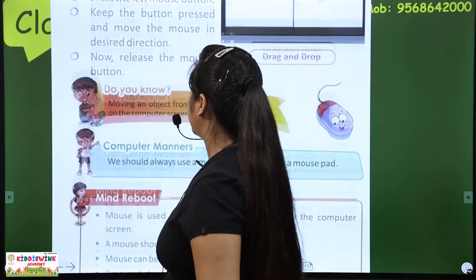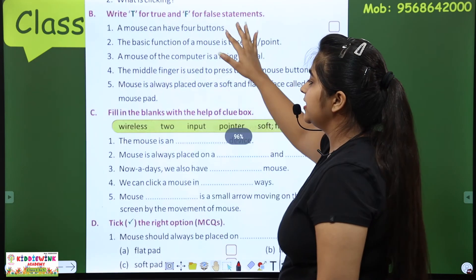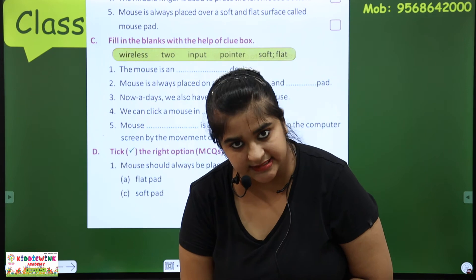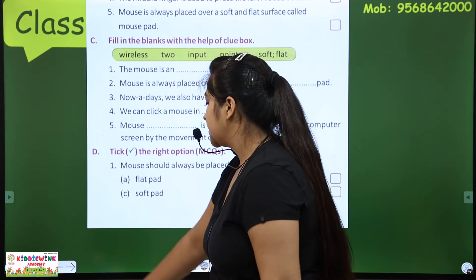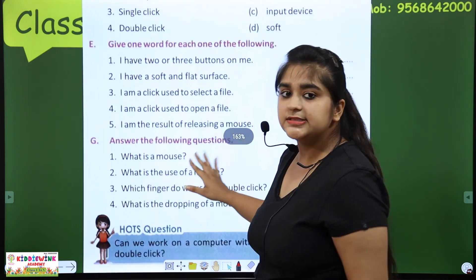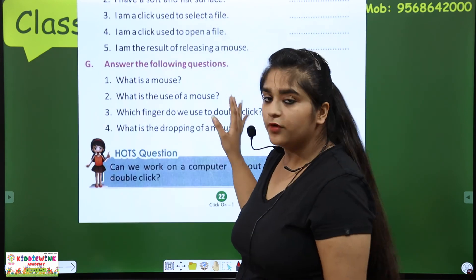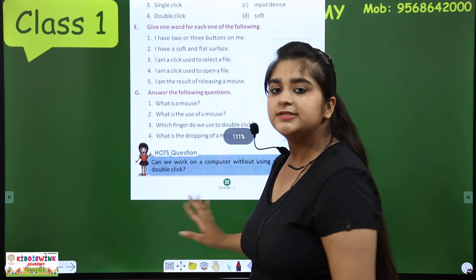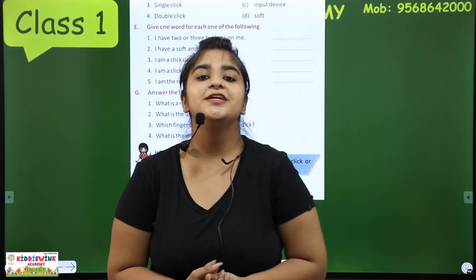Ab dekho bachche, hamara chapter complete kar liya hai. Ab next page pe true/false hai, fill in the blank hai. Yeh aapko ma'am assignment sent karengi — aapko yeh book mein hi complete karna hai. Uske baad match the following, give one word answer — yeh bhi book mein karna hai. Answer the following questions — yeh aapko notebook mein complete karna hai. Assignments will be sent to you. Understood the chapter? Hope you all have understood. Thank you.